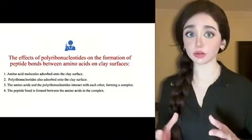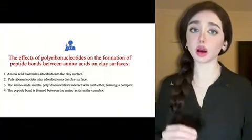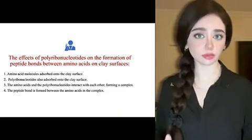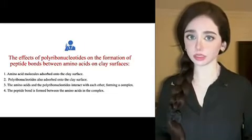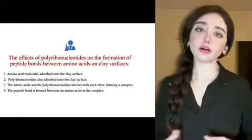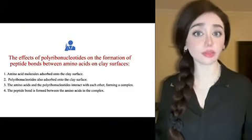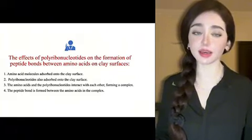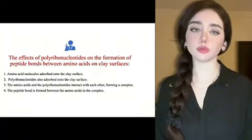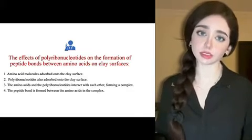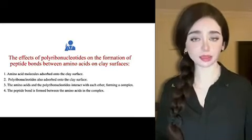So let's imagine this together. There are a lot of organic molecules on the surface of the clay. First, there are amino acid molecules, which are organic molecules absorbed into the clay surfaces. Second, there are polyribonucleotides, which are long chains of ribonucleotides — the building blocks of RNA — also absorbed into the clay surface. The amino acids and the polyribonucleotides interact with each other, forming a complex, and the peptide bond is formed between the amino acid and the complex.